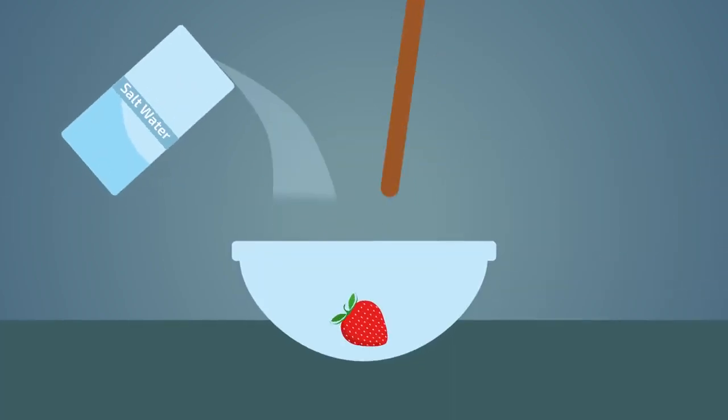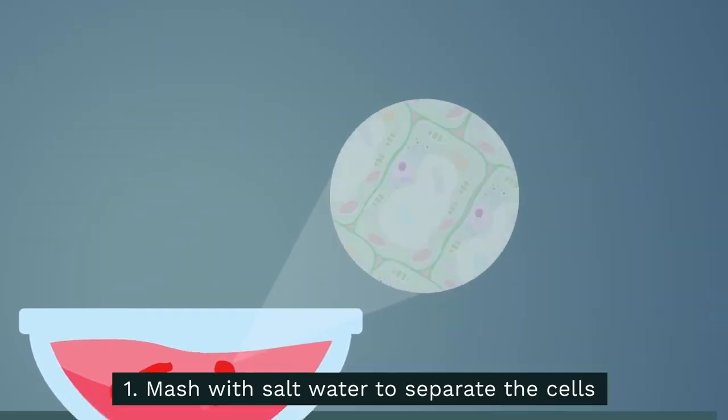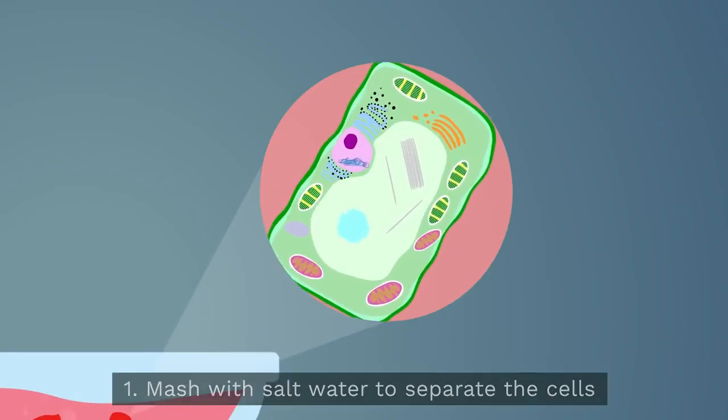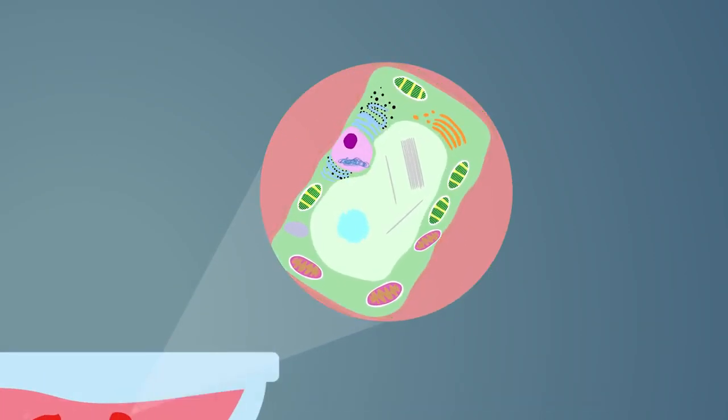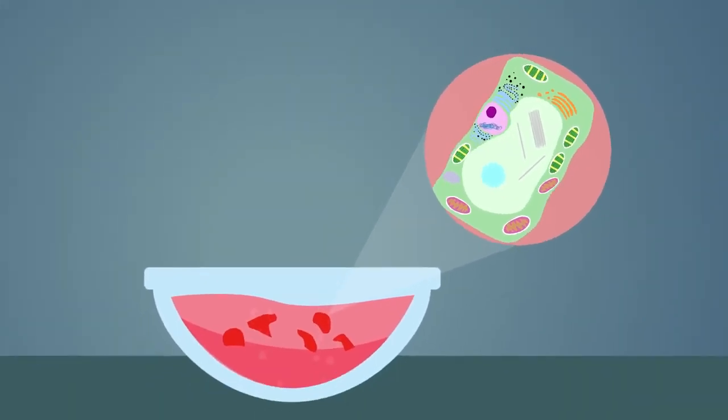You then blend or mash the fruit with salt water. This breaks apart the cells from each other. It also starts to break down the cell walls. Salt is used so that the DNA is more likely to clump together in the final stage.